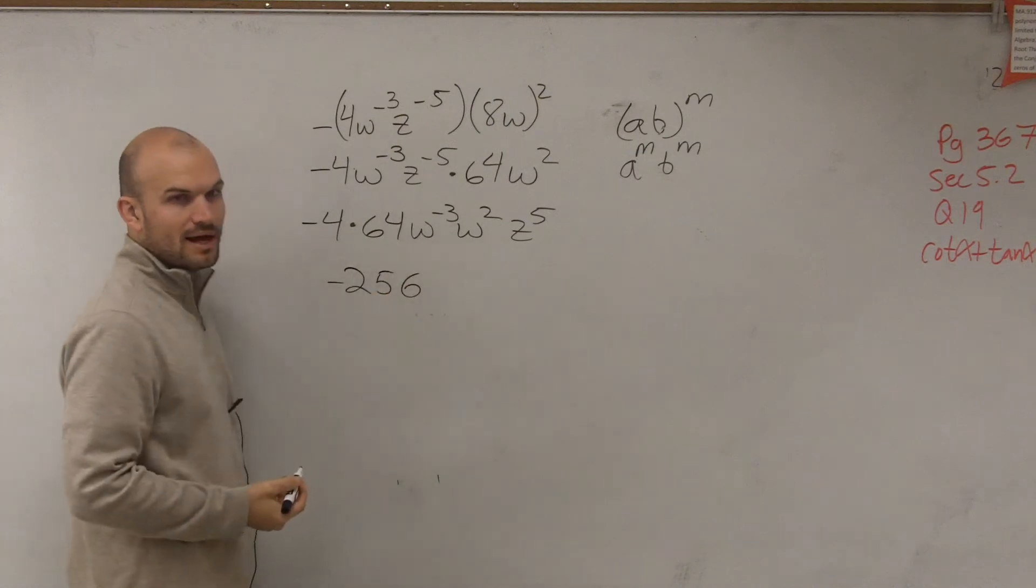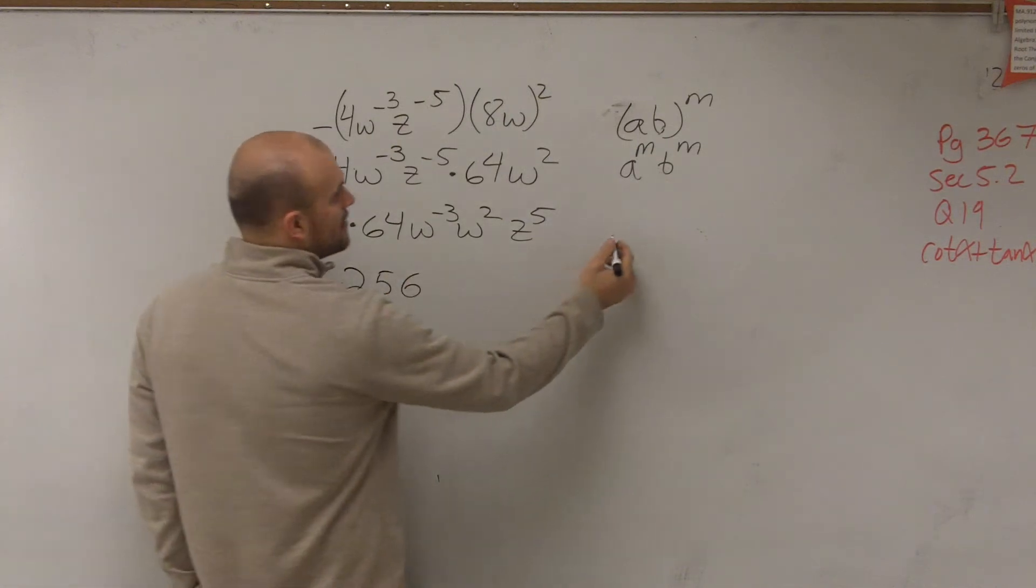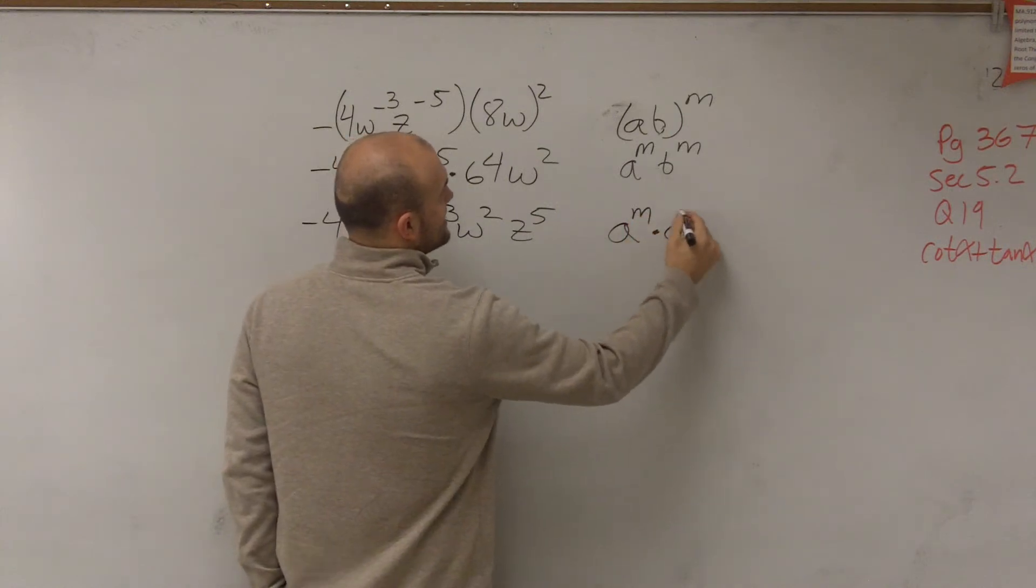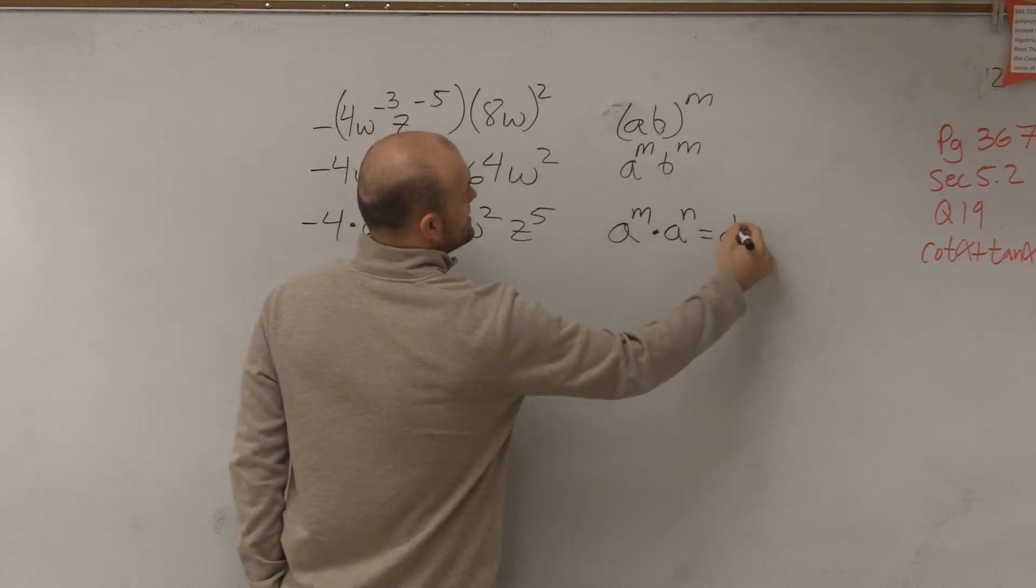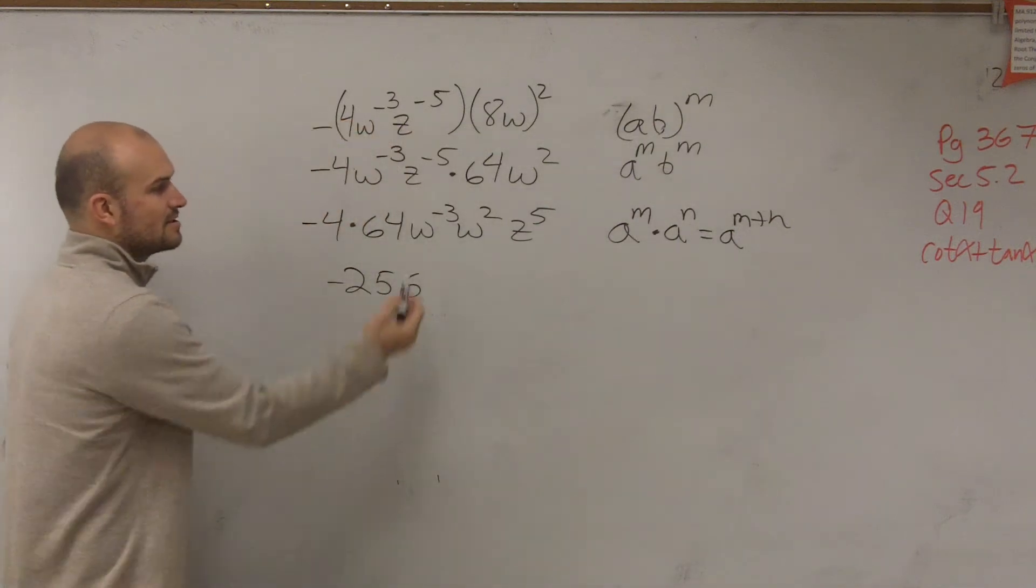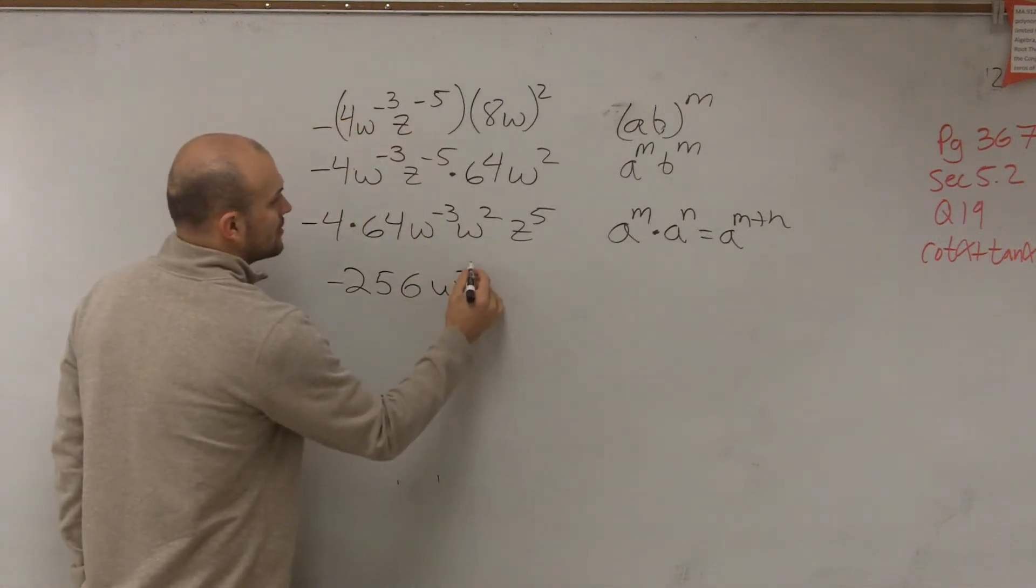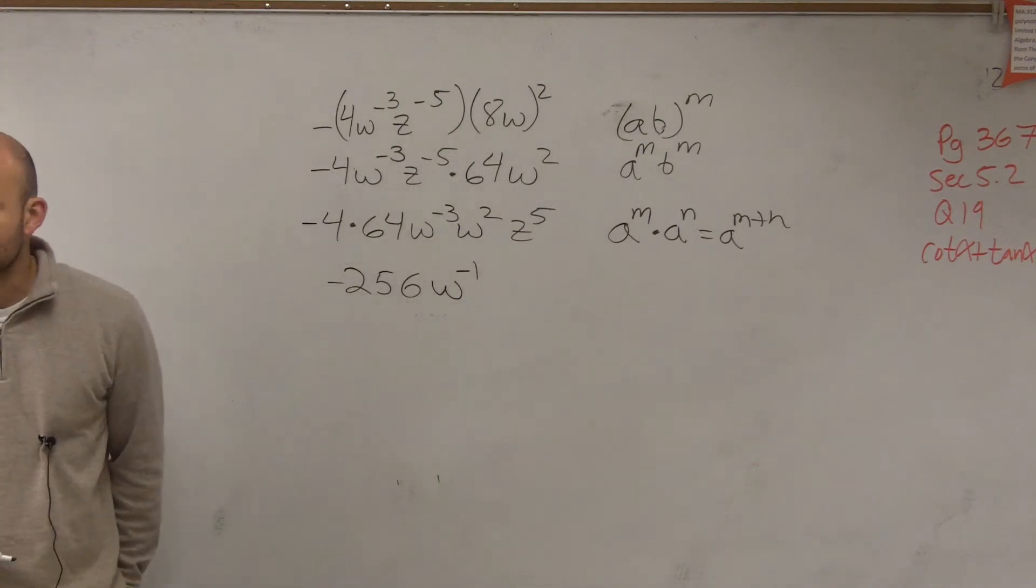Then what happens when you multiply bases with exponents? Well, remember, a to the m times a to the n equals a to the m plus n. So you're going to add the exponents. So negative 3 plus 2 is going to be w to the negative first power, right?